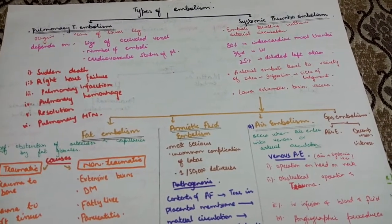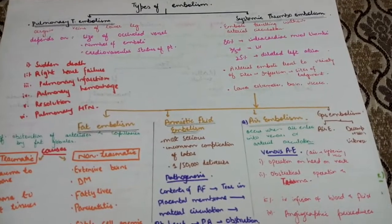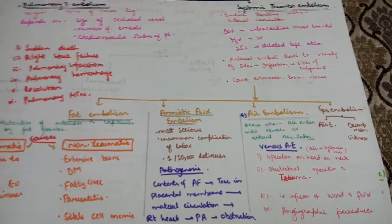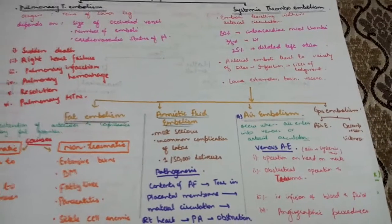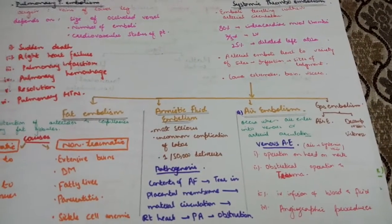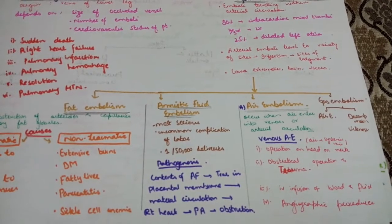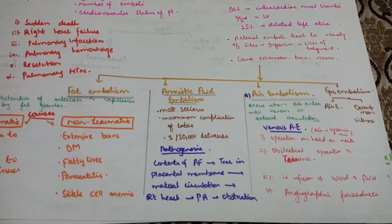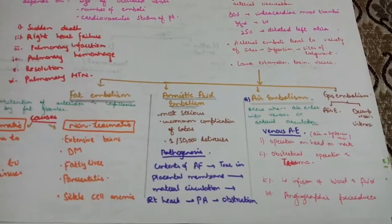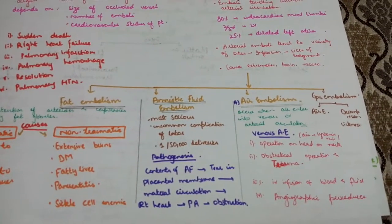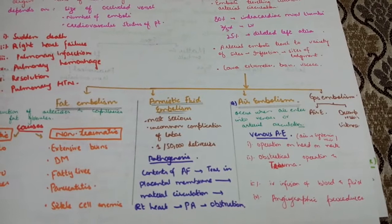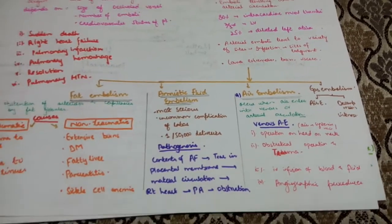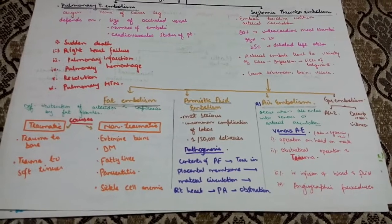Then you have systemic thromboembolism. It is emboli traveling within the arterial circulation. 80% is due to intracardiac mural thrombosis, 25% is dilated left atrial thrombosis. Arterial thrombi travel to a variety of sites where they cause infarction. Lower extremities can also be affected.